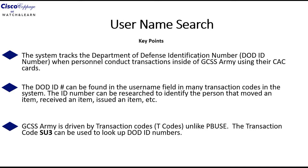The ID number can be researched to identify the person that moved an item, received an item, or issued an item. This can be beneficial when you're trying to see who issued an item inside the system if you didn't issue it, or who received that item if you did not receive it. So it can be used as a great research tool to find out the person that received, issued, or transferred that item — whatever the case might be.